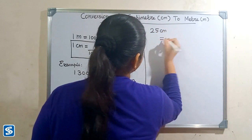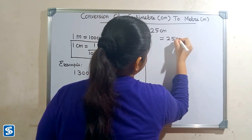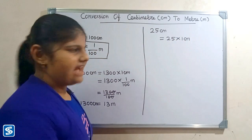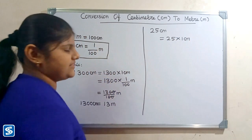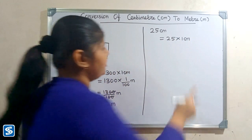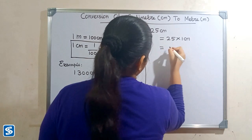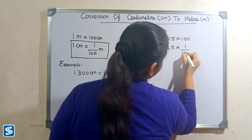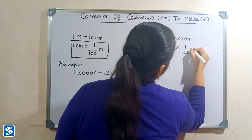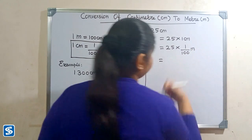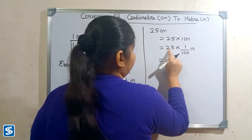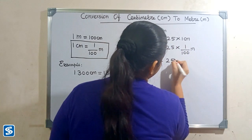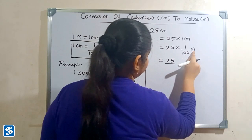Next we will take another example: twenty five centimeters. Twenty five centimeters can be written as twenty five multiplied by one centimeter. We substitute one by hundred meters in the place of one centimeter, so twenty five multiplied by one by hundred meters. Twenty five multiplied by one will be twenty five, so twenty five divided by hundred meters.